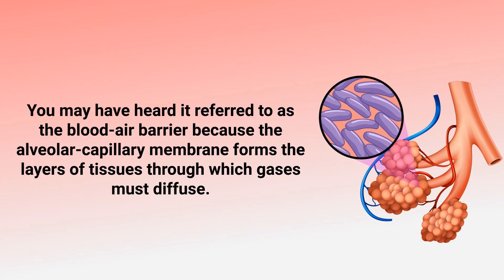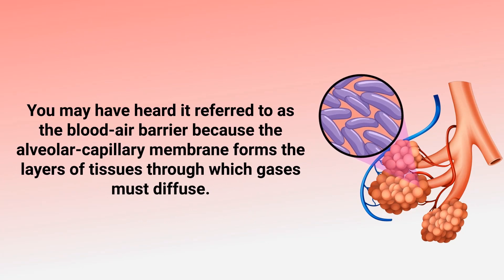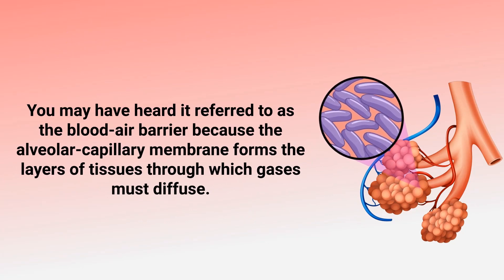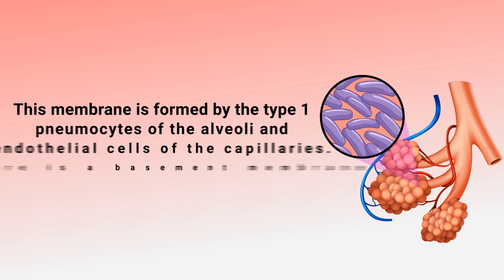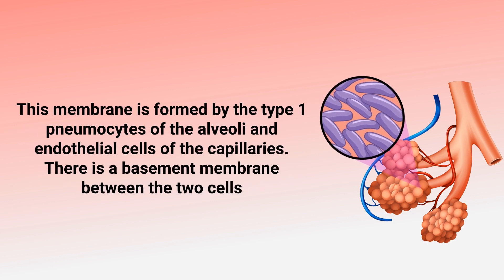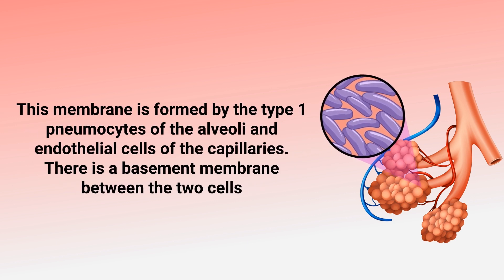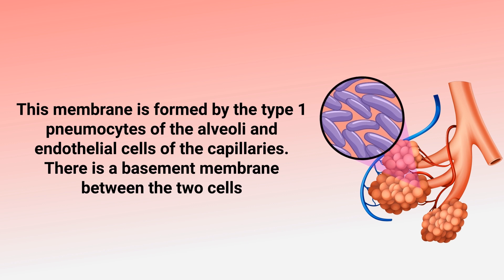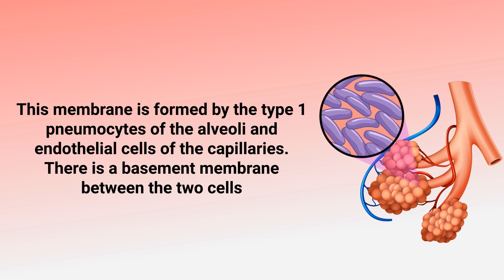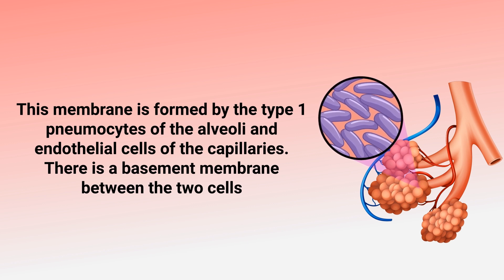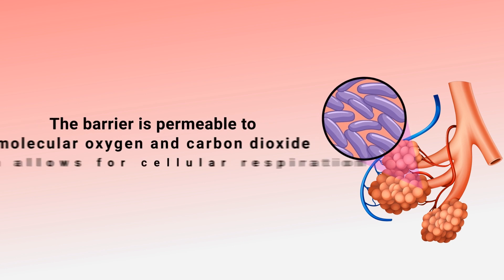You may have heard it referred to as the blood-air barrier, because the alveolar capillary membrane forms the layers of tissues through which gases must diffuse. This membrane is formed by the type 1 pneumocytes of the alveoli and endothelial cells of the capillaries, with a basement membrane between the two cells.